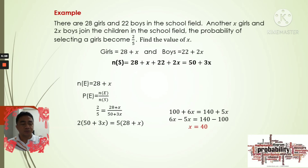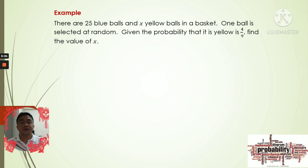Now we go to the next problem. There are 25 blue balls and x yellow balls in a basket. One ball is selected at random. Given that the probability of selecting a yellow ball is 4 over 9, find the value of x.